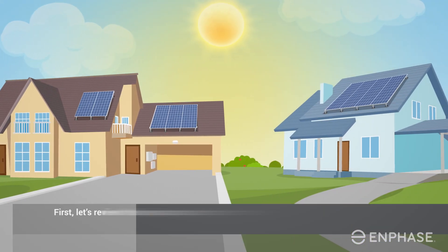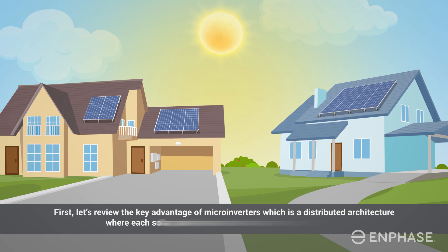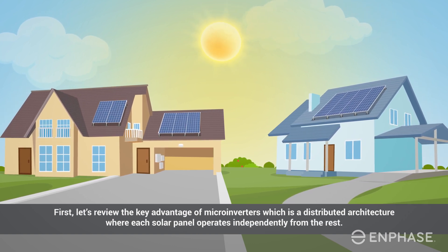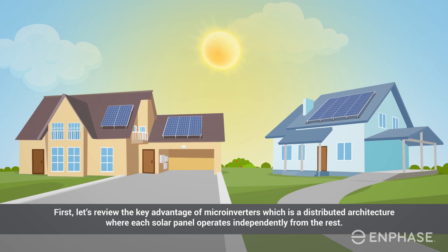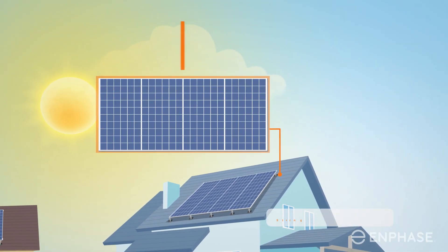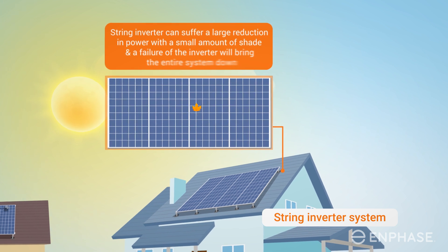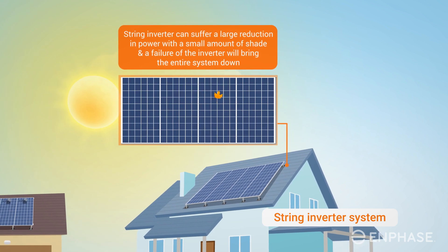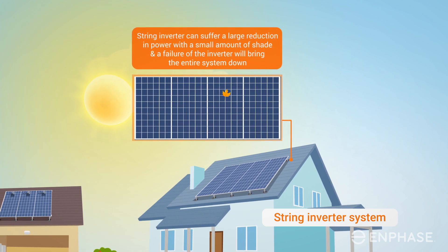First, let's review the key advantage of microinverters, which is a distributed architecture where each solar panel operates independently from the rest. A system with the alternative centralized technology — a string inverter — can suffer a large reduction in power with a small amount of shade, and a failure of the inverter will bring the entire system down.